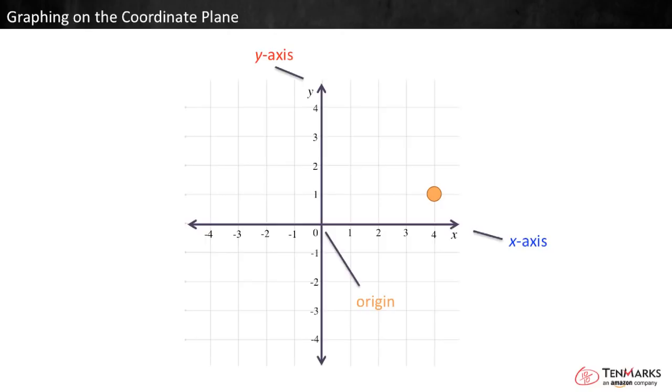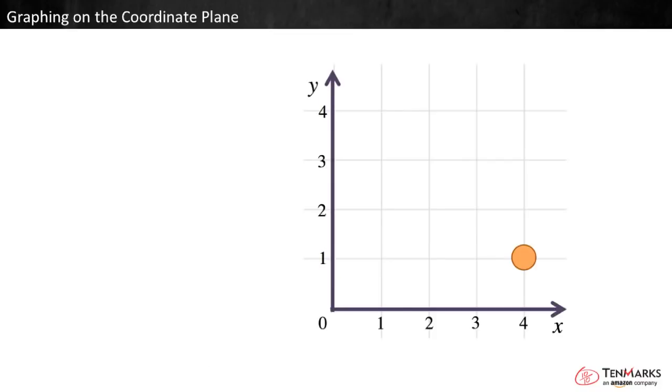We're going to look at just the top right quadrant of the grid. To describe the location of a point, write an ordered pair telling the x and y coordinates. First tell the x coordinate, or how many units to the right of the origin the point is located.